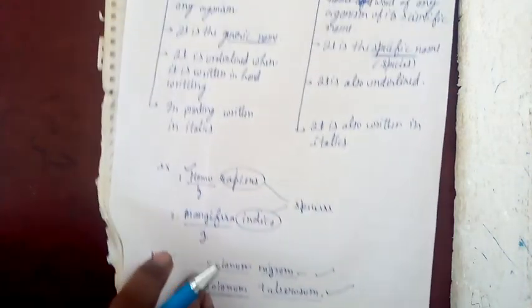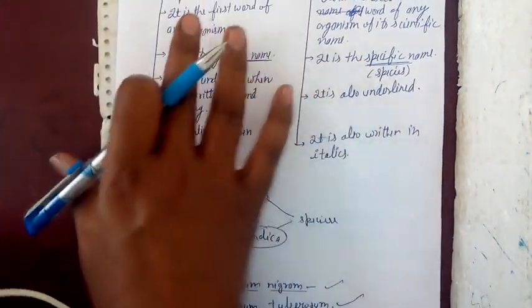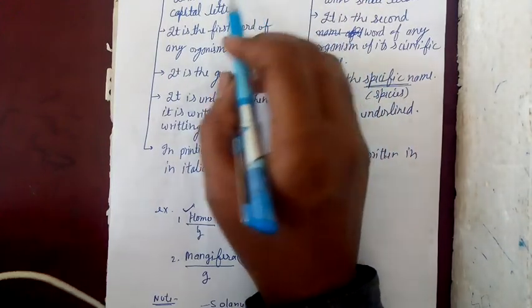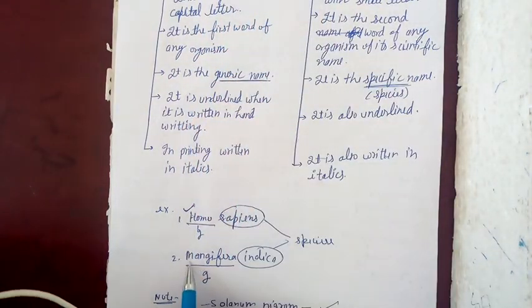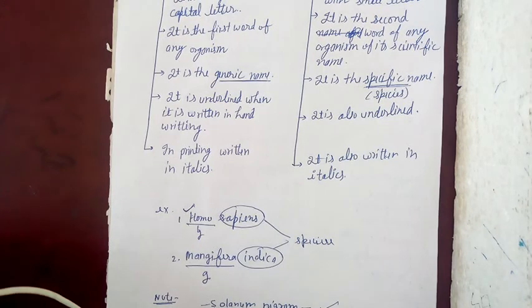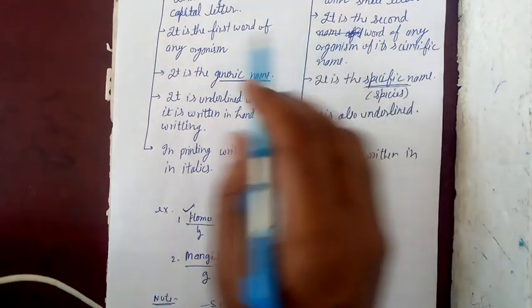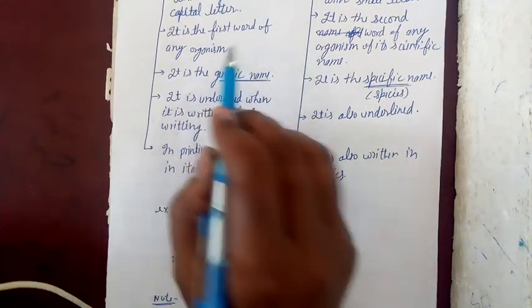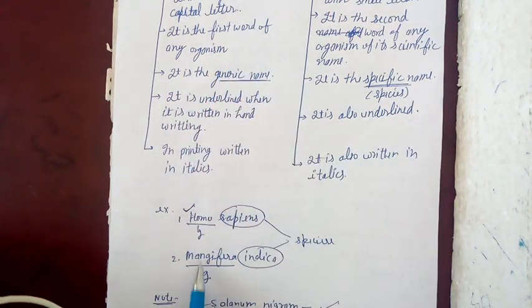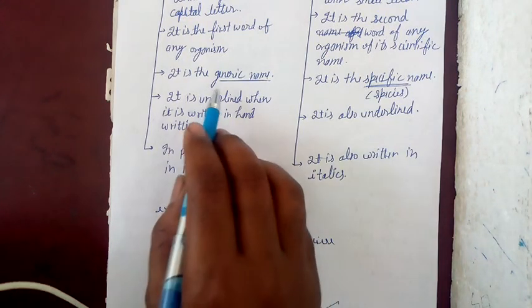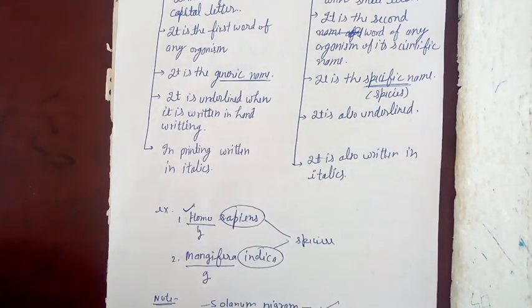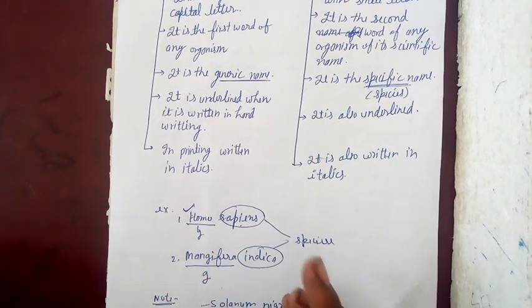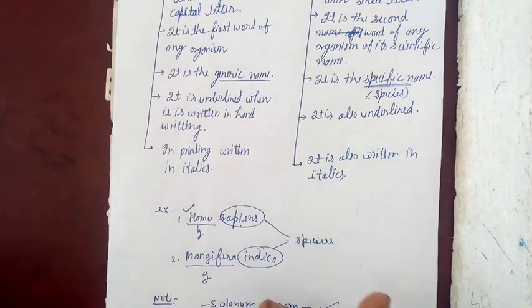It is the first word of any organism. The first word of any organism is the genus. For example, in Homo sapiens, Homo is the genus.